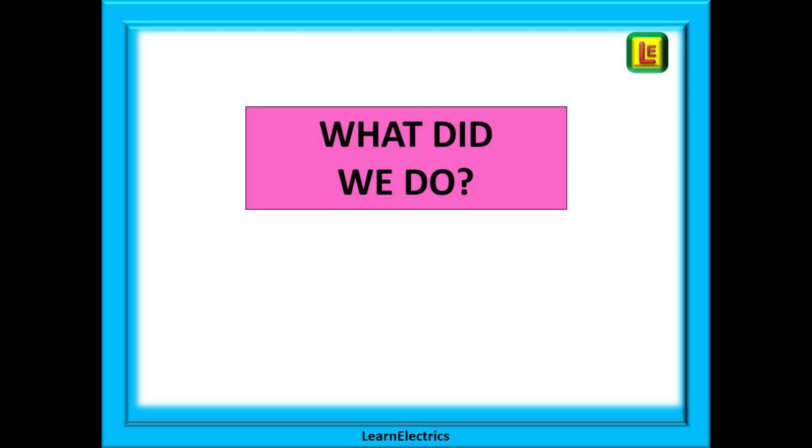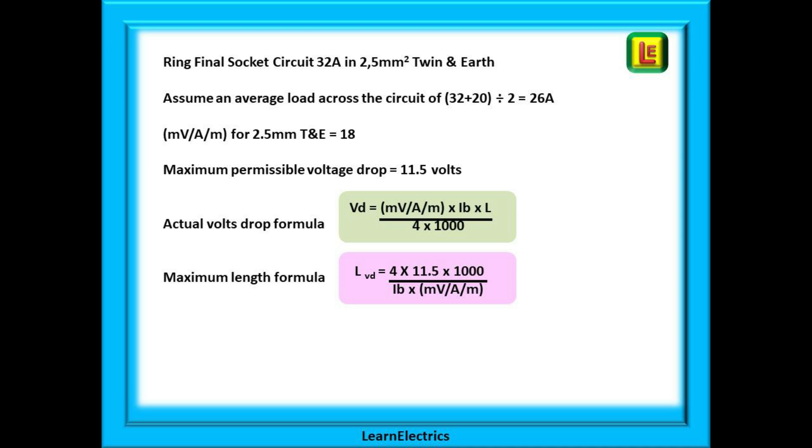So what have we done? We had a fully loaded ring final socket circuit protected by a 32 amp circuit breaker and wired in 2.5 millimeter twin and earth as recommended by the wiring regulations. We assumed the average load current by adding the full load current to the load at the furthest point and dividing this by two, which gave us 26 amps in this example. From the tables in the wiring regulations we know that the MVAM number for this cable is 18, and we also know from the regs that a maximum volts drop of five percent is permitted for a ring circuit, and this equates to 11.5 volts. We then used the appropriate formula to calculate either the volts drop or the maximum length for the circuit. Practice this a few times and it will become a powerful skill in your mental toolbox.